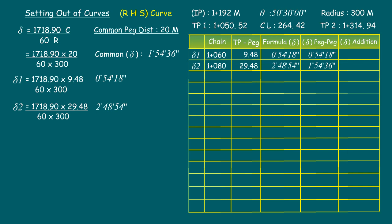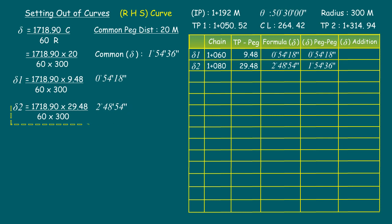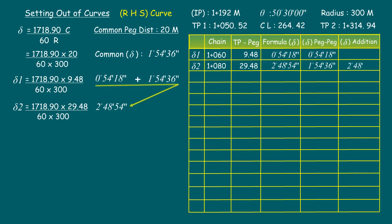Now we have two methods to calculate further detailing. One is to calculate the delta value for every peg individually using the complete curve length from tangent point one to that particular peg. The other — the easy method — is to simply add the common delta value to the previous delta value until we complete the common chainage distance.